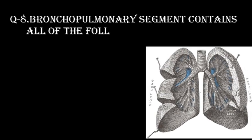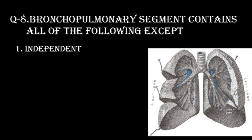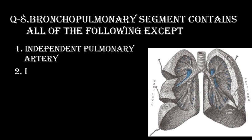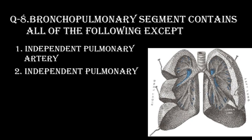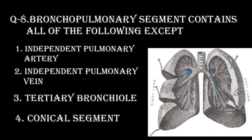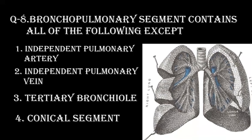Question number 8. Bronchopulmonary segment contains all of the following, except. Option 1: Independent pulmonary artery. Option 2: Independent pulmonary vein. Option 3: Tertiary bronchiole. Option 4: Conical segment.